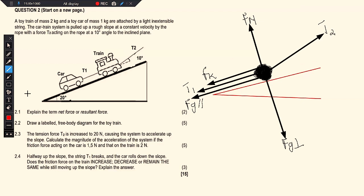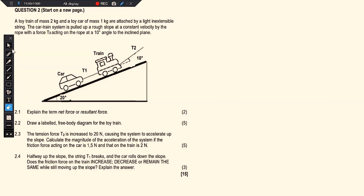Moving to question 2.3: the tension force T2 is increased to 20 newtons, causing the system to accelerate up the slope. Calculate the magnitude of the acceleration of the system if the friction force acting on the car is 1.5 newtons and on the train is 2 newtons. Since this is a system, we apply simultaneous equations — the acceleration of the car equals the acceleration of the train.